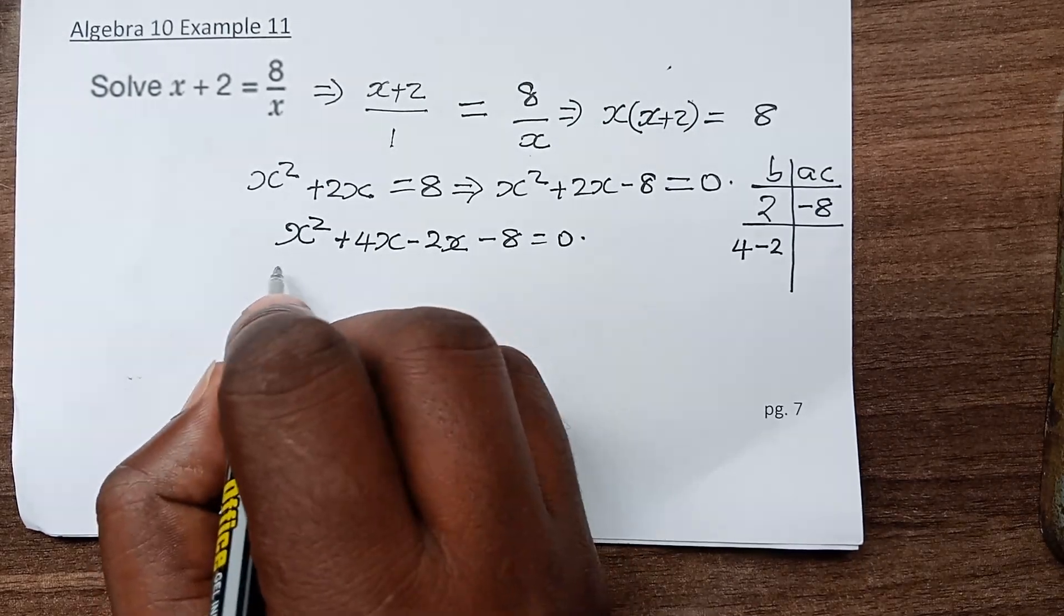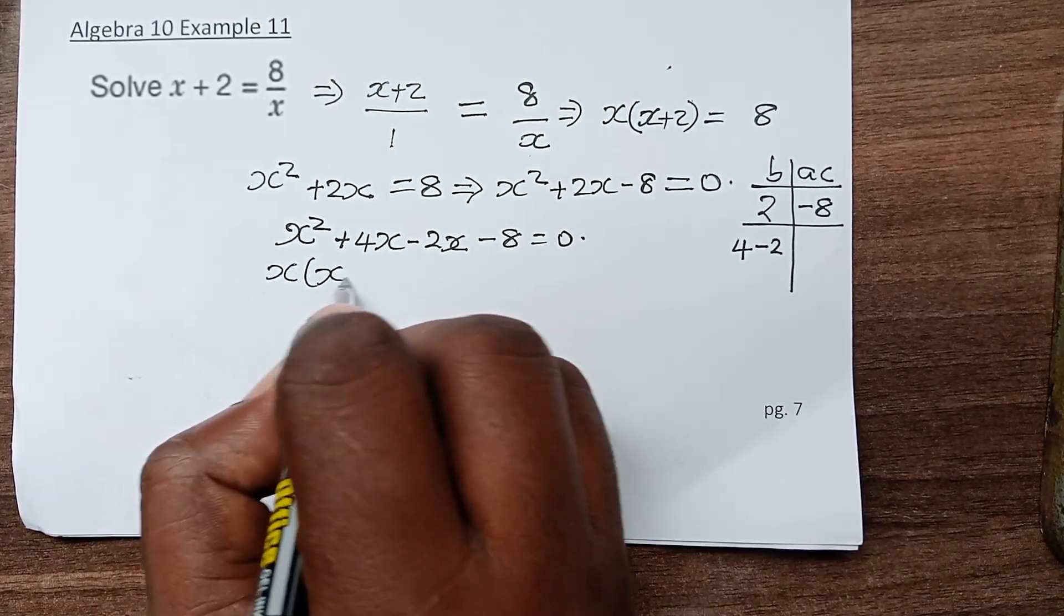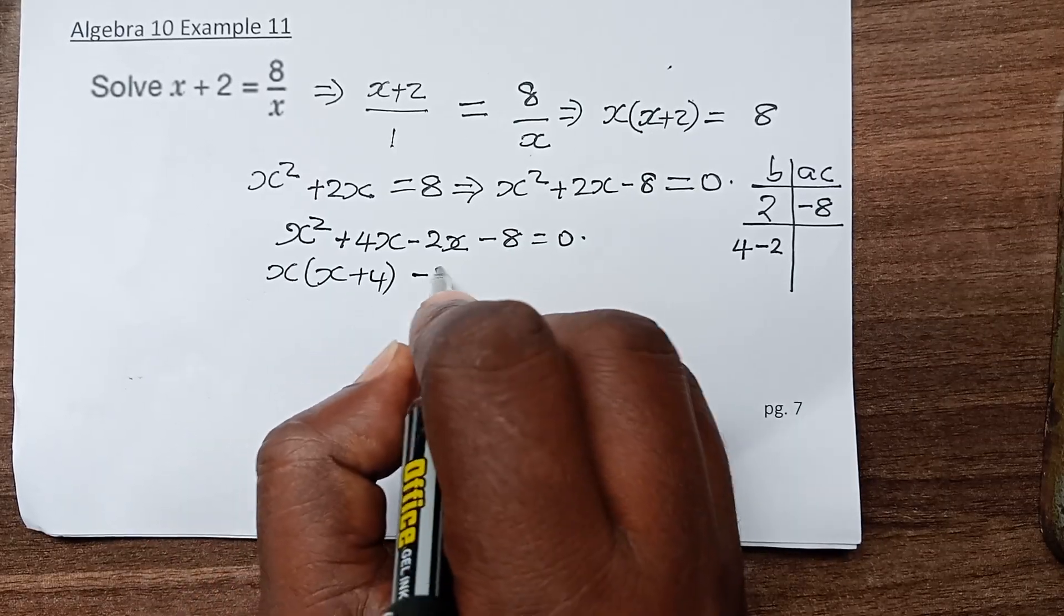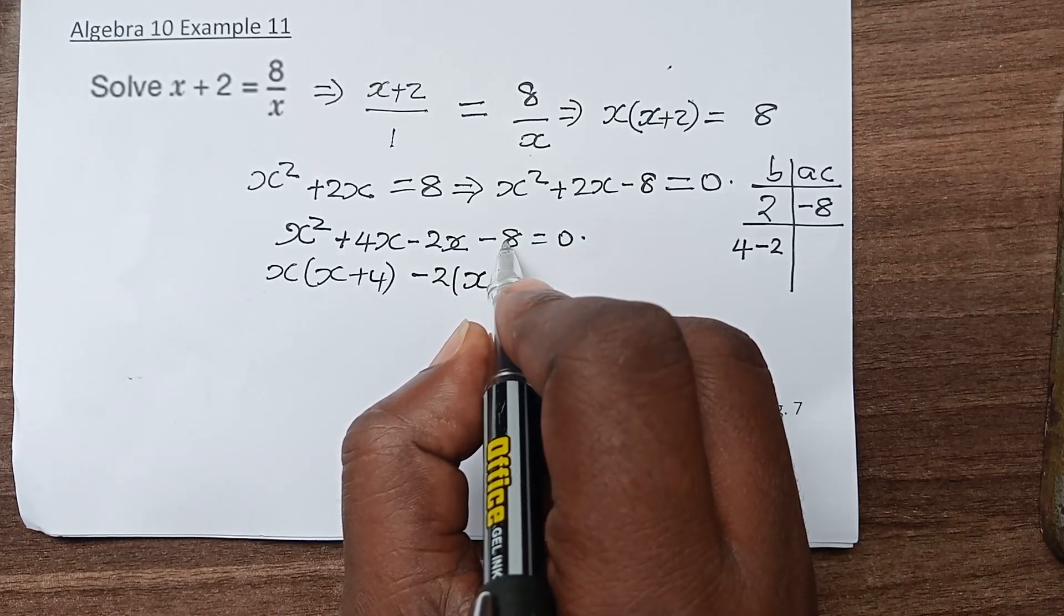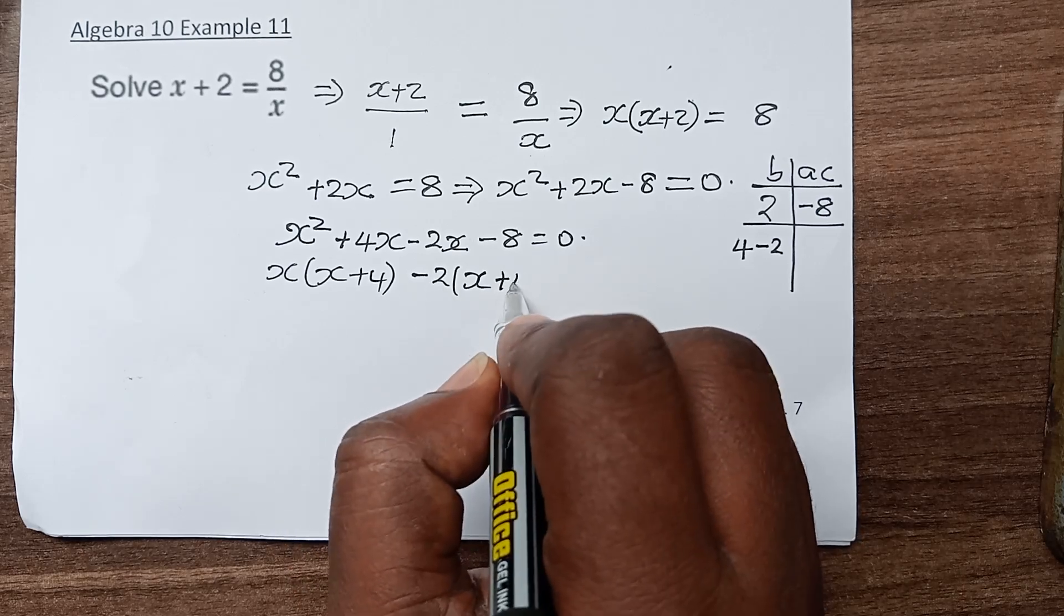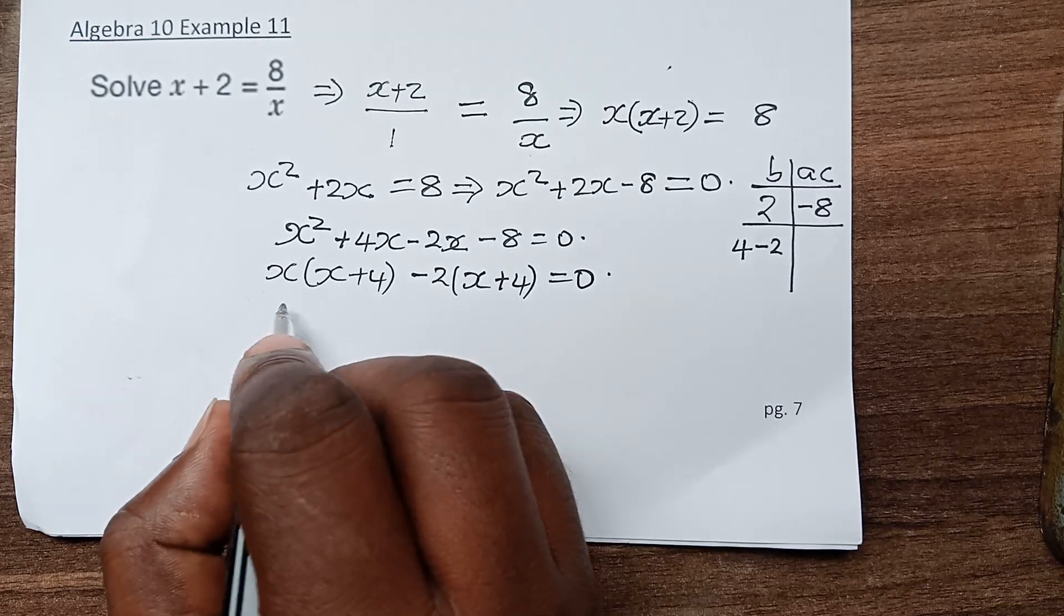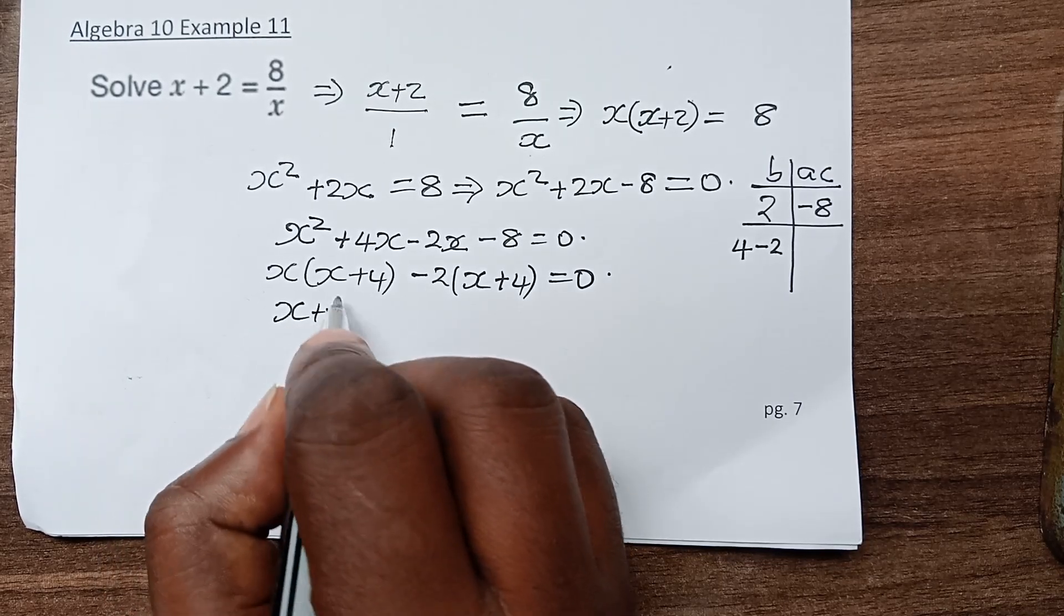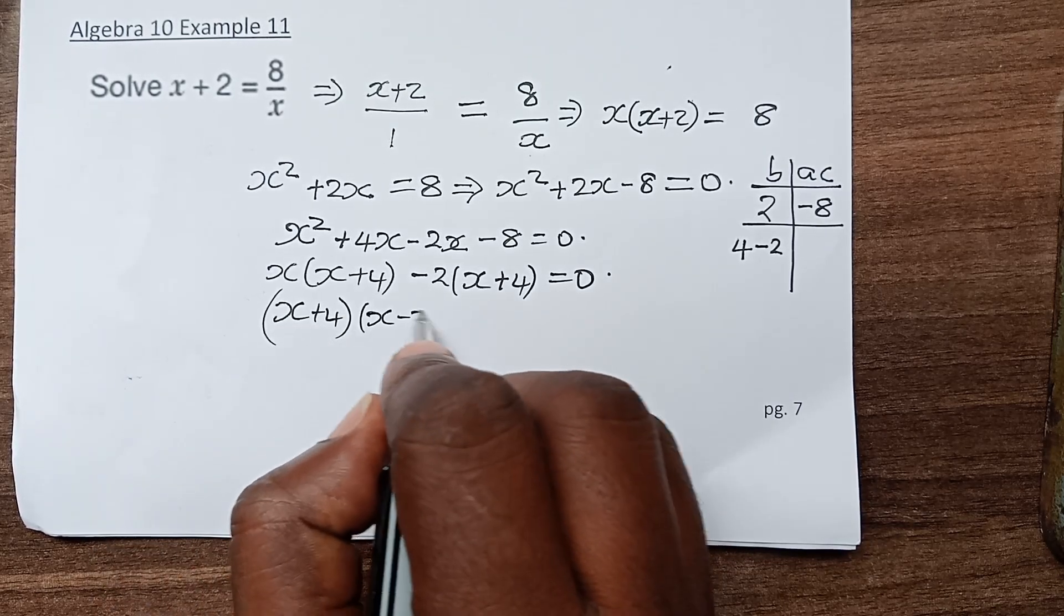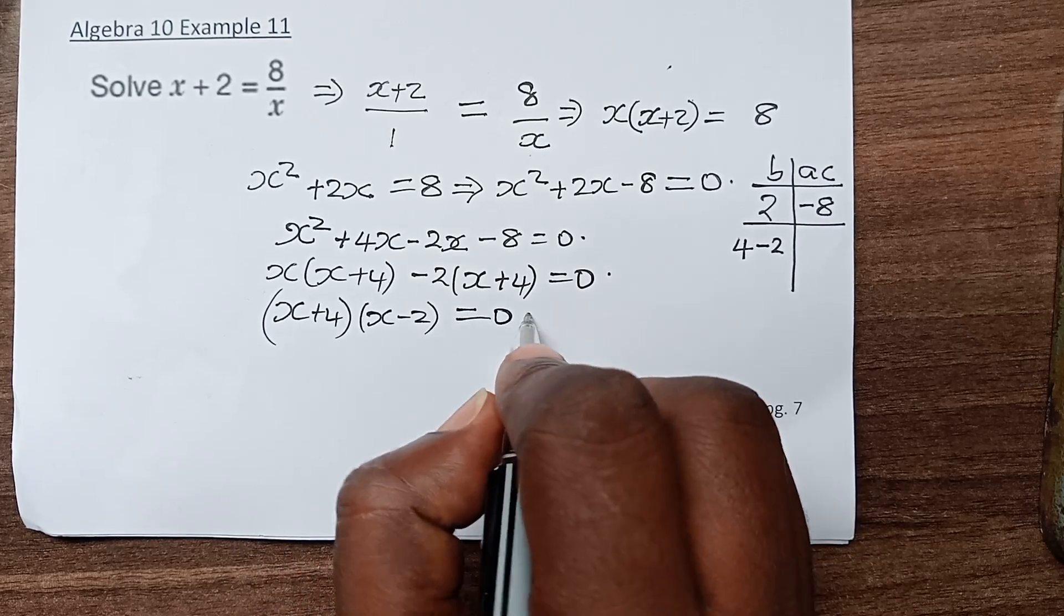Factoring out the first two terms, we get x times (x plus 4) minus 2 times (x plus 4) equals 0. So we have (x plus 4) times (x minus 2) equals 0.